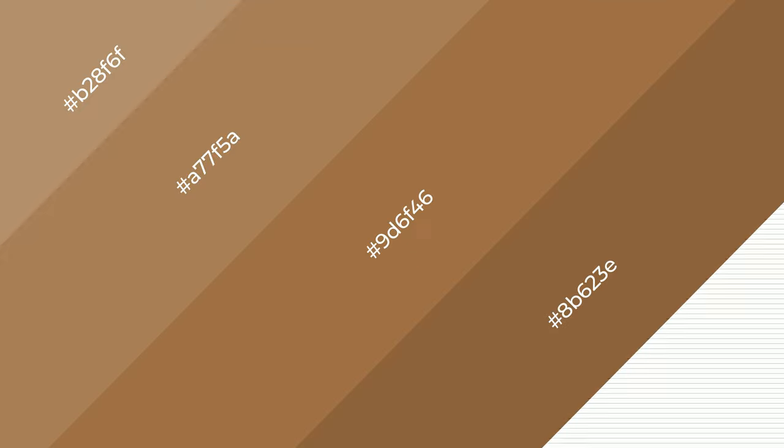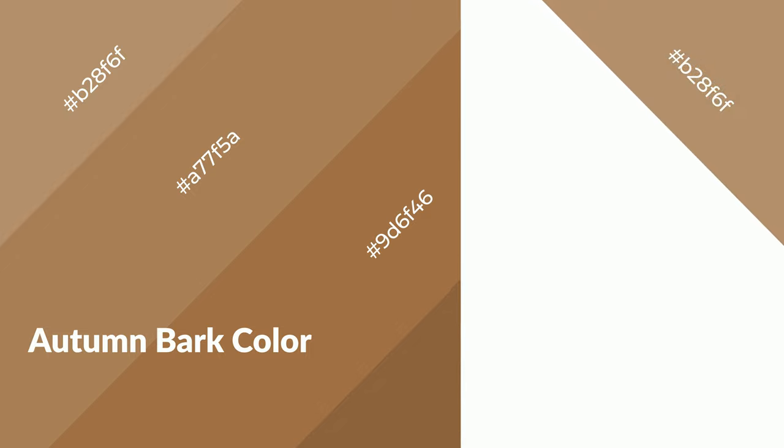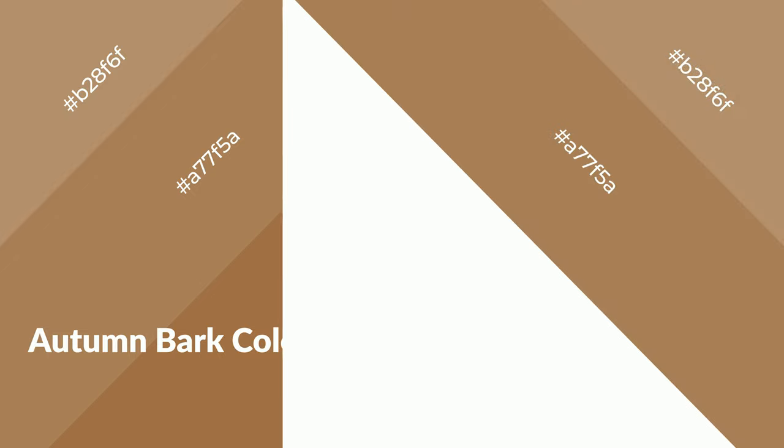To generate shades of a color, we add black to the color, and it is used in patterns, 3D effects, and layers. Shades create depth and drama. Autumn bark is a warm color and it emits cozier and active emotions. Warm colors are symbols of warmth, fire,